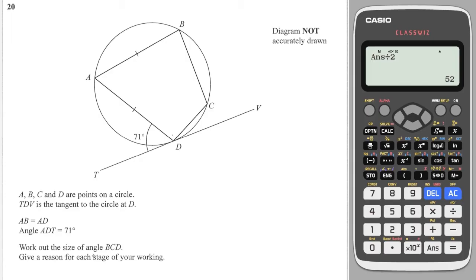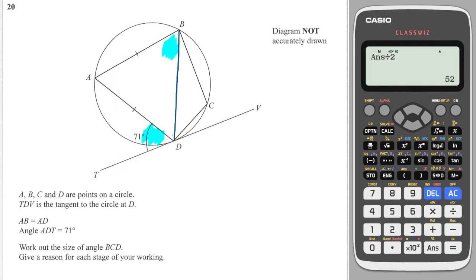Next question: we're looking for angle BCD. The trick here is to draw a line splitting the figure into two triangles. We can now use the alternate segment theorem — when a triangle meets a tangent, the angle at the tangent equals the angle opposite in the triangle. This tells us that angle is 71°.